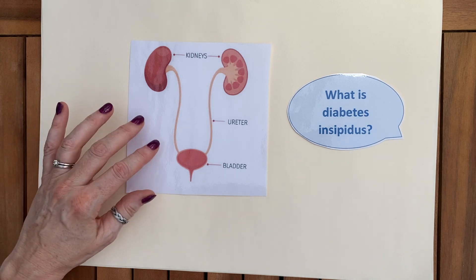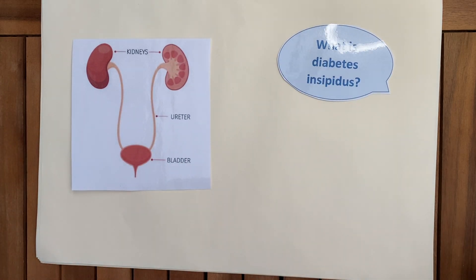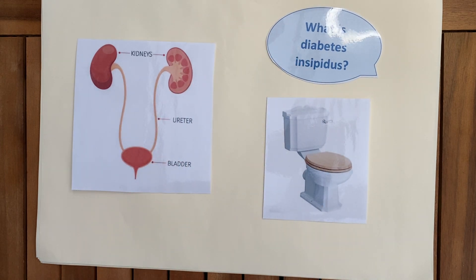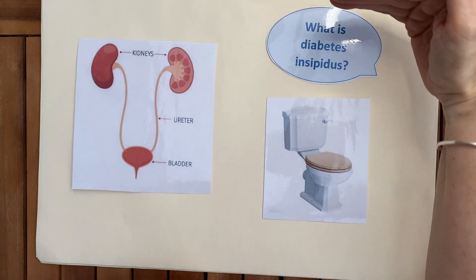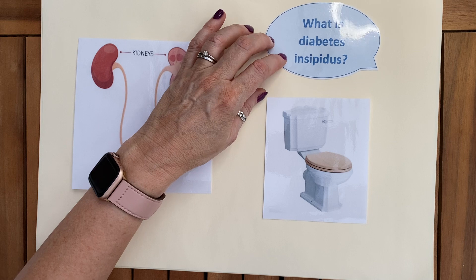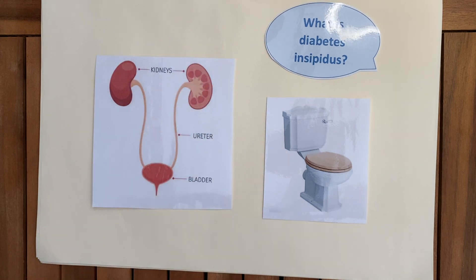The symptoms of diabetes insipidus are extreme thirst and excessive urination. A person with this condition can urinate up to 20 liters a day — that is ten two-liter bottles of coke, which is an amazingly high amount. This is the core issue with the water balance in diabetes insipidus, and it is caused by the anti-diuretic hormone (ADH), not insulin.